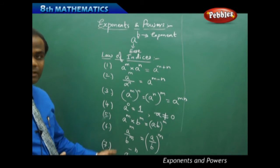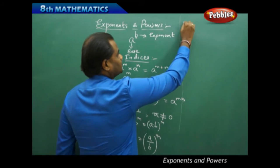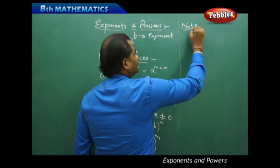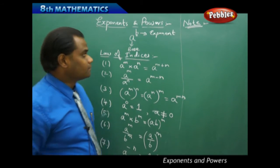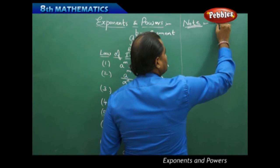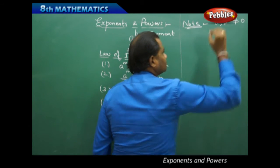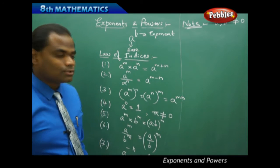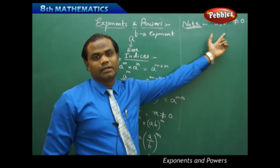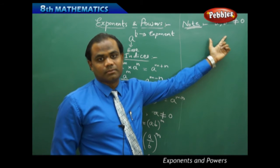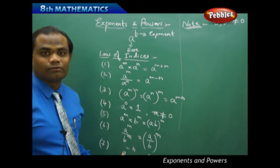An important note: for all these laws of indices, the restriction is that a and b are not equal to 0. We do not consider zero in these cases. Only non-zero integers or non-zero rational numbers are considered for all seven laws of indices.